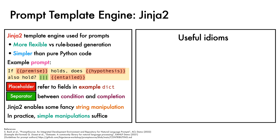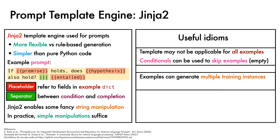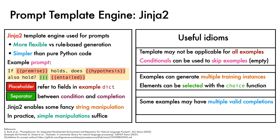A few useful idioms were uncovered by the PromptSource authors during development. First, a given template may not be applicable for all examples in a dataset; for such cases, Jinja conditionals can be used to skip these examples by converting them to empty strings. Second, some examples are typically employed to generate multiple training instances, notably in cases when they have multiple valid completions. To address this, a choice function is provided that allows particular elements to be selected during dataset generation. Finally, for examples that have multiple valid completions, these can be specified as a separate field by the prompt author and will be available at evaluation time.